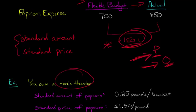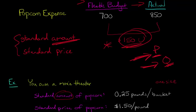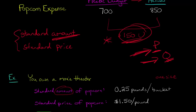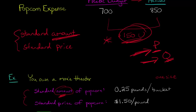Let's stick with the idea that you own a movie theater. You determine the standard amount of popcorn is one quarter of a pound — a quarter pound of popcorn should go into each bucket, one size fits all. And the standard price of popcorn, based on historical trends, is $1.50 a pound — that's what you think you should be paying. So now you've got a standard amount and a standard price.